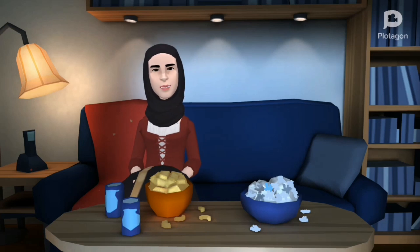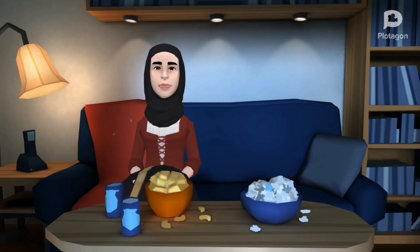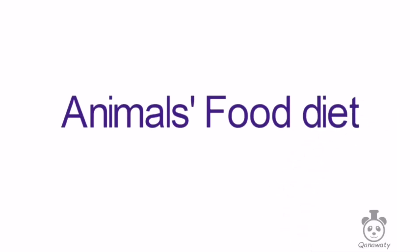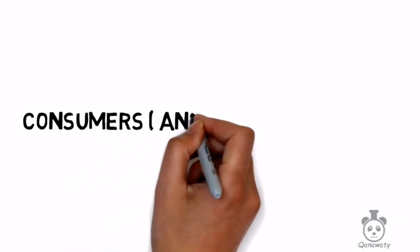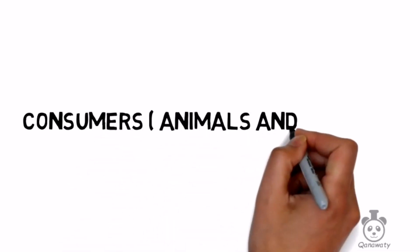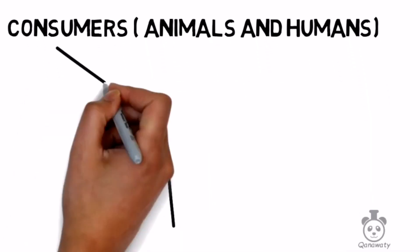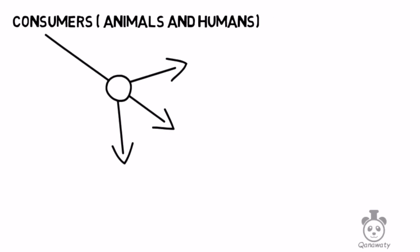Tonight I'm watching National Geographic — they are talking about animals' food diets. Watch with me! Consumers — and by consumers we mean animals and humans — are divided into three main categories according to their food diets.